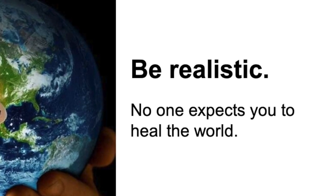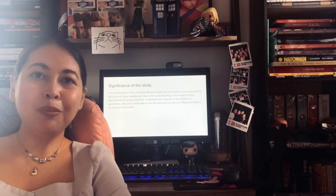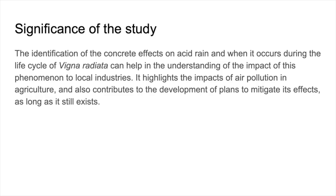So please be realistic when outlining your significance. Here we show you the very humble significance of the study of our research on acid rain and mung beans. As you can see, our significance is very concrete because it helps farmers and botanists understand the effects of acid rain on a specific plant and when you can actually observe its detrimental effects. This will be very useful if you're growing mung beans at home so that you know when to protect your plants from acid rain, and also what kinds of detrimental effects to expect if you have limitations and opportunities to protect your plants.